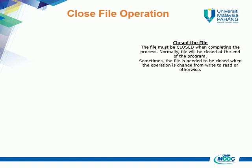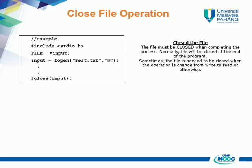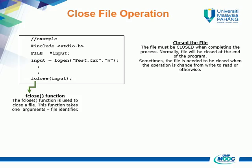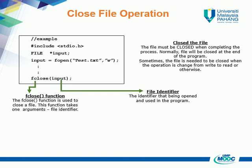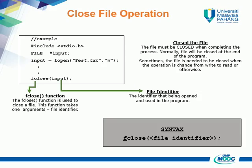This subchapter covers the close file operation. The file must be closed when completing the process. Normally, the file will be closed at the end of the program. Sometimes, the file needs to be closed when the operation is changed from write to read or otherwise. The fclose function is used to close a file and takes one argument: the file identifier — the identifier that was opened and used in the program. From this explanation, the syntax for the close operation can be formed.